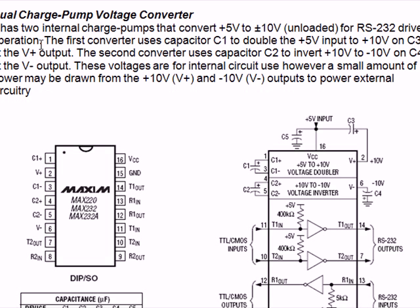With the driver we need more than 5 volts — that's about 10 volts. The first converter uses capacitor C1 to double the plus 5 volt to plus 10 volt on C3 at the V+ output — this develops plus 10 volts. The second converter uses capacitor C2 to invert plus 10 volt to minus 10 volt on C4 at the V- output.